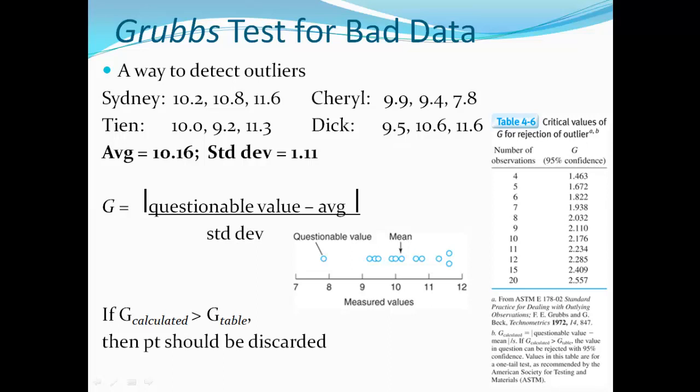The equation is right there. It says you take the absolute value of the questionable value minus the average, and you divide it by the standard deviation. And if what you calculate is greater than what the table is, then that point should be discarded. So the average, if you take the average of all those numbers, it's 10.16. If you take the standard deviation of that, it's 1.11. So what you would do is take the absolute value of 7.8 minus 10.16 divided by 1.11. That should give you 2.13.